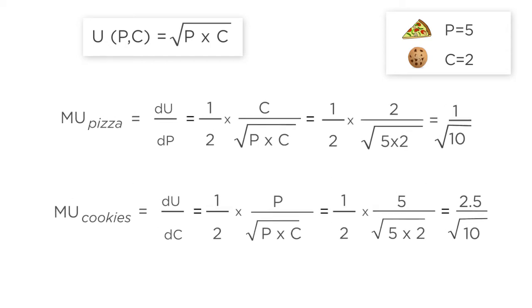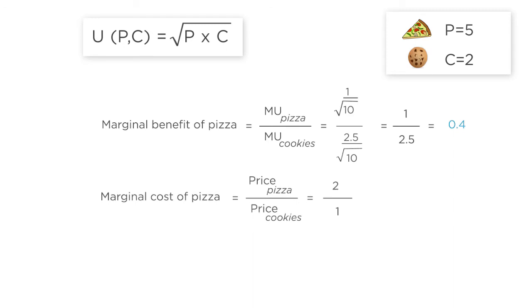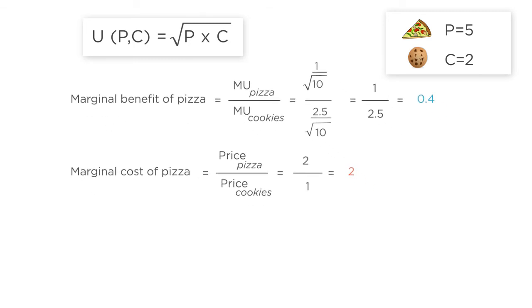With these two marginal utilities, we can represent the marginal benefit of pizza as the ratio 1 over 2.5 or .4. The marginal cost of pizza is the price ratio, $2 over $1 or 2. Since the marginal benefit of pizza is less than the marginal cost, we should give up pizza for more cookies.